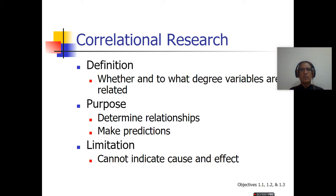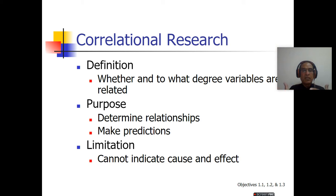The simple definition of correlation is that correlational research involves describing whether and to what degree variables are related. The purpose of correlation is to determine the relation between two or more variables. Its relation might be a weak relation, moderate relation, or strong relation. Based upon the correlation, we can also make predictions about the future. A limitation of correlational research is that the correlation study cannot indicate cause and effect.